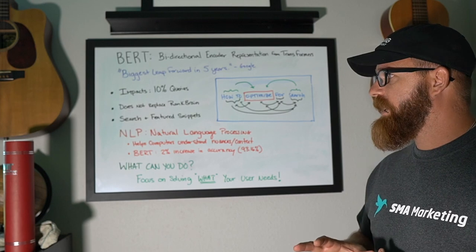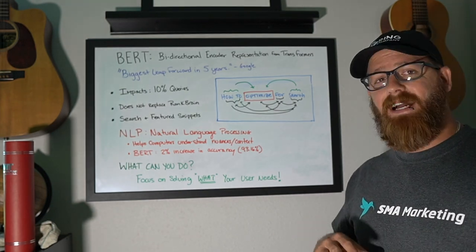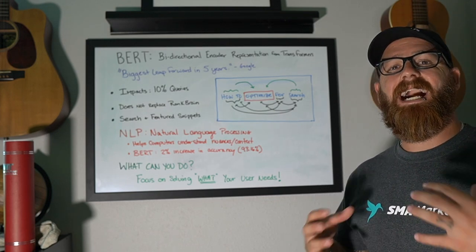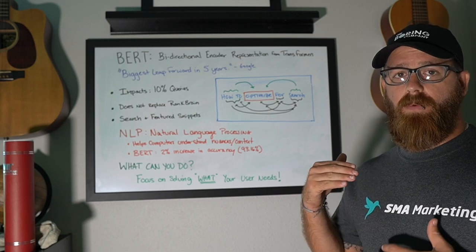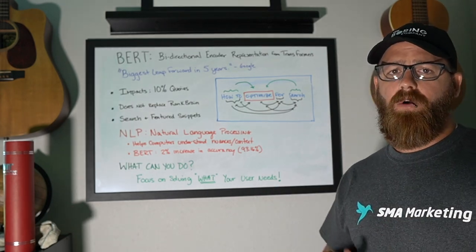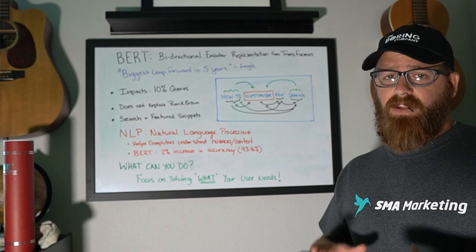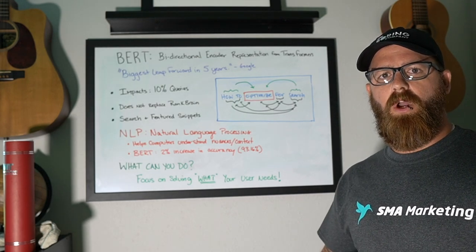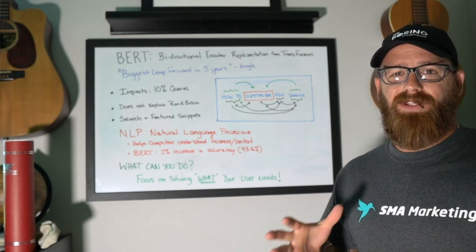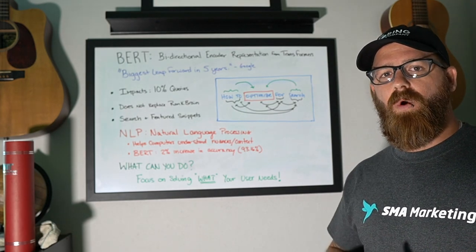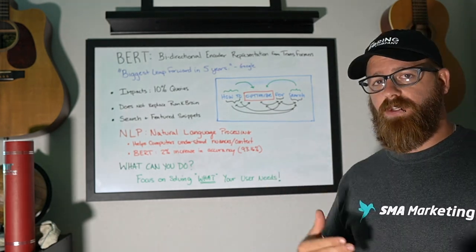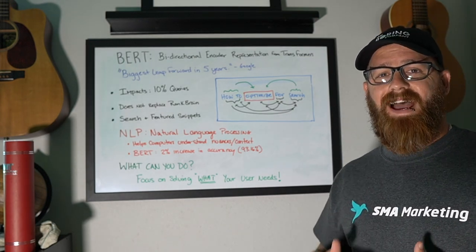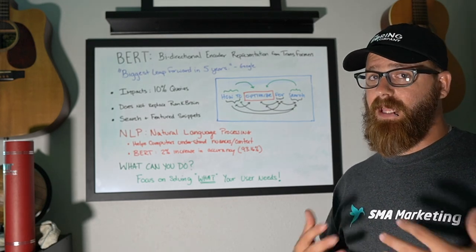Now, this is something that they've been investing a lot in, and it's impacting not just native search, so the blue links, but also the rich snippets. Now, Google's goal has always been to understand the context of the query. This bi-directional encoder, it's a form of what's known as NLP or natural language processing. That is the process of a computer trying to understand how language works.